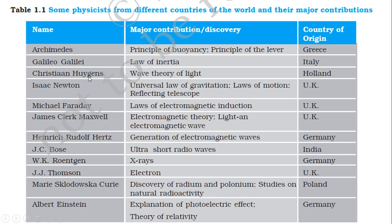Then one more scientist: Christian Huygens, who found the wave theory of light. Light normally travels in a straight line, but whenever it comes across an obstacle it changes its path — that property is called diffraction. Diffraction and interference are very important phenomena. You must go through the wave theory of light.